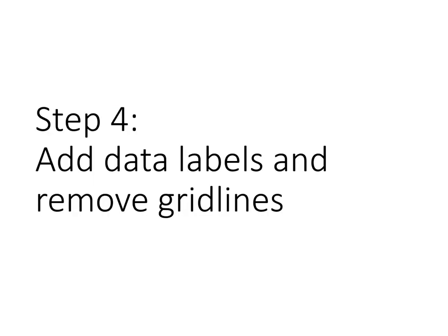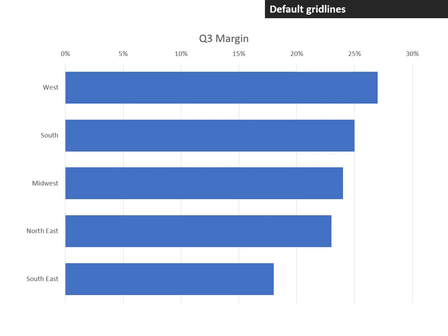Step four: we add data labels and remove grid lines. The grid lines are those vertical lines that run from the top to the bottom of the chart. The idea of a grid line is that the audience is supposed to look at the end of the bar and move their eyes up to figure out the value. Instead, why not just put data labels on the end of each bar? It gives the audience the exact number, and now we don't need the grid lines.